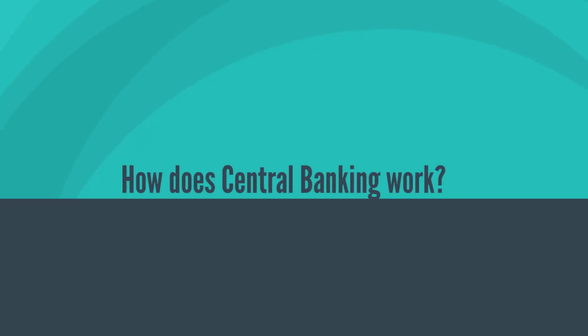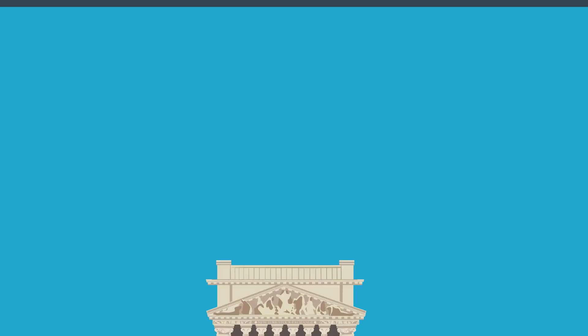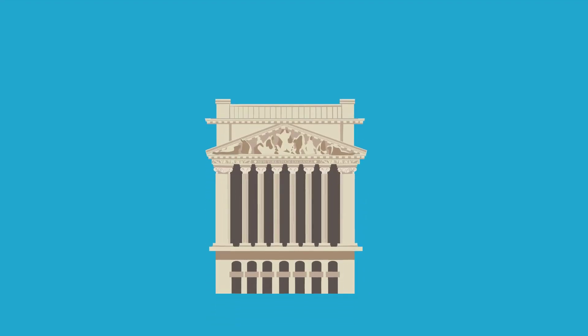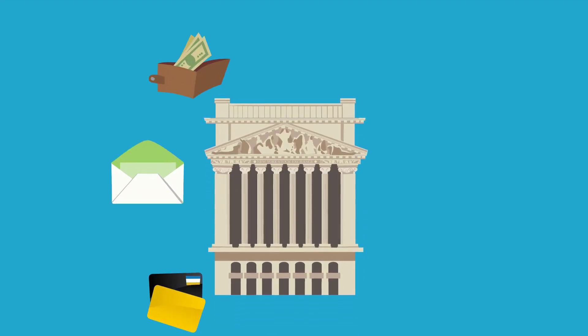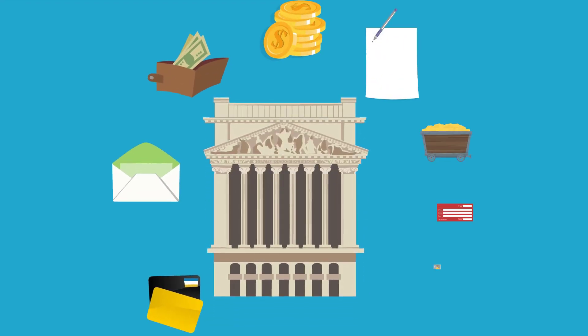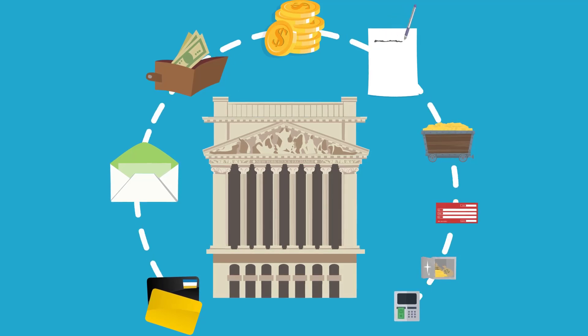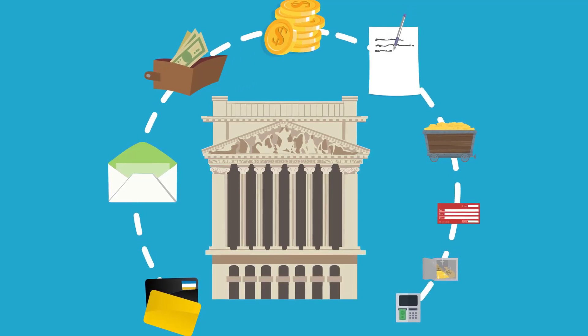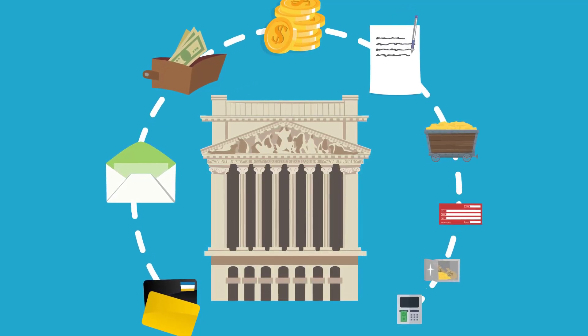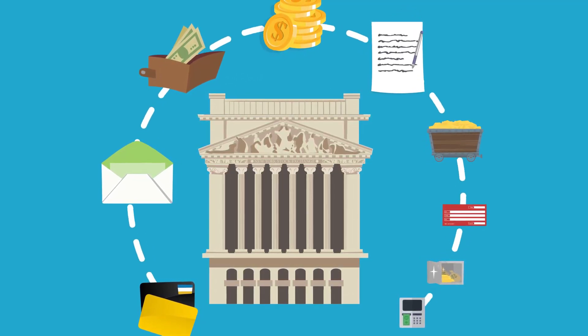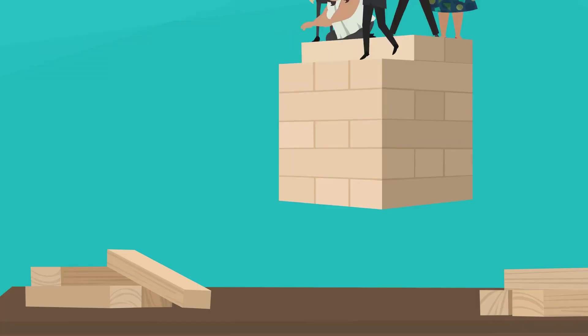How does central banking work? Central banking plays a fundamental role in modern economies by overseeing monetary policy, regulating financial institutions, and maintaining stability in the financial system.